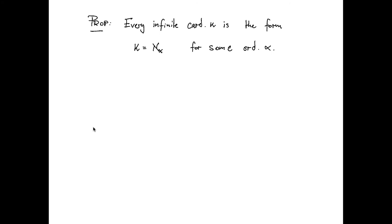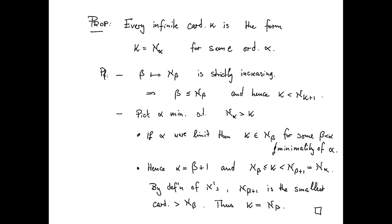So while the previous proposition made sure that every element in that aleph hierarchy is actually a cardinal, it's not clear from the beginning that we actually catch every cardinal this way. And that's the subject of this proposition here: every infinite cardinal kappa is of the form kappa equals aleph sub alpha for some ordinal alpha. Now, before I give you a basic outline of the proof, again I encourage you to take a few minutes and think about how to prove this yourself.